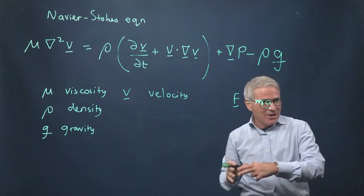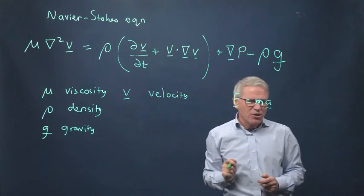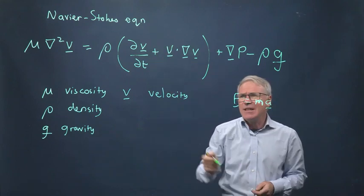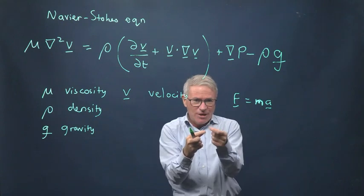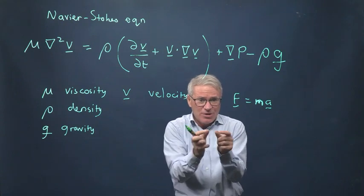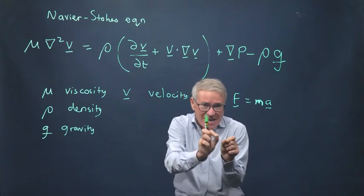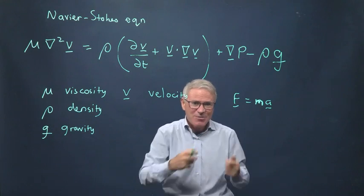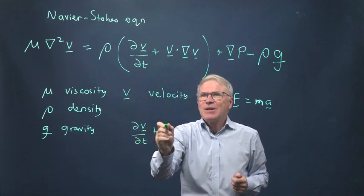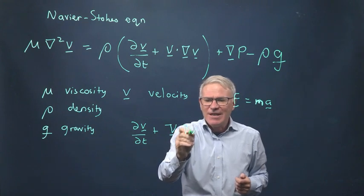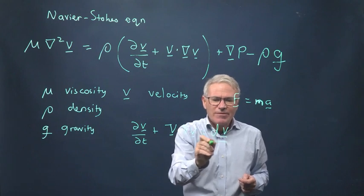So rather than mass, we have mass per unit volume. That's why we have a density here. This is the acceleration term. And you might say, well, acceleration, isn't that dv dt? But of course, we have a moving fluid. So if we're in a given location, yes, there will be a change in velocity. But actually, that piece of fluid will have moved. And you've got to account for the fact that fluid comes into your fixed point in space with its own velocity.